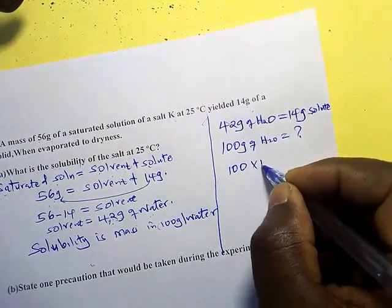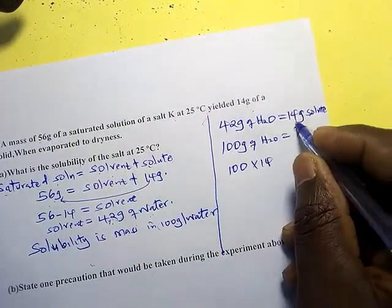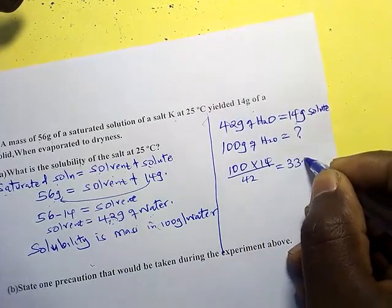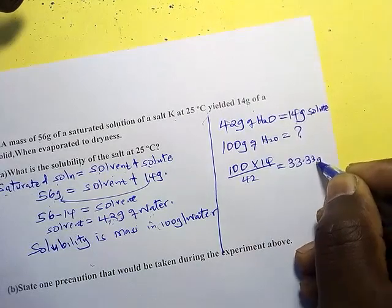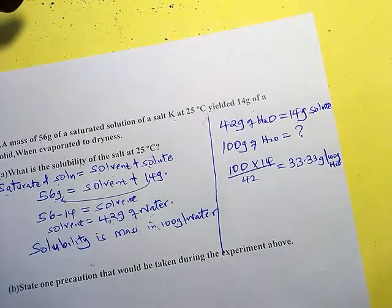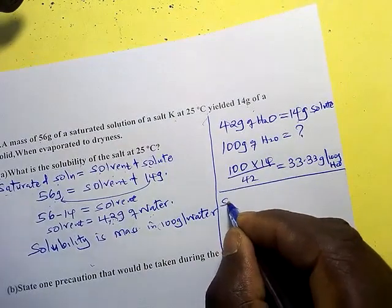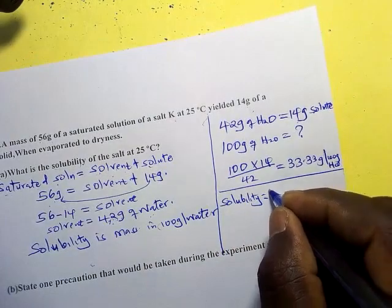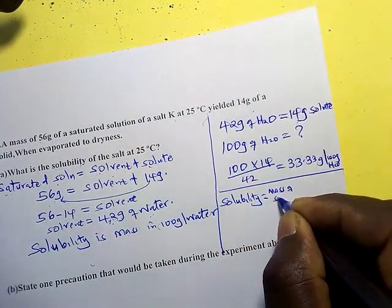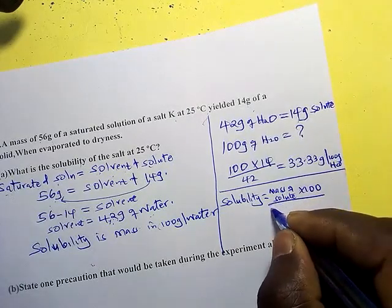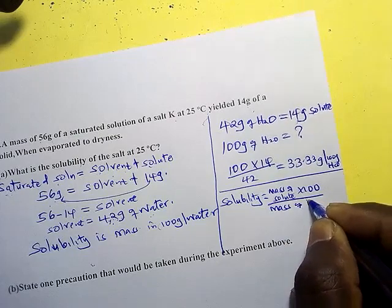100 grams of water will contain: 100 times 14 divided by 42, which gives us 33.3 grams per 100 grams of water — and that is the solubility. There is a formula you can use: Solubility equals mass of solute times 100 divided by mass of solvent.